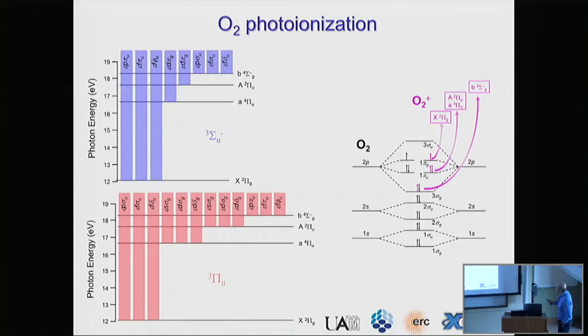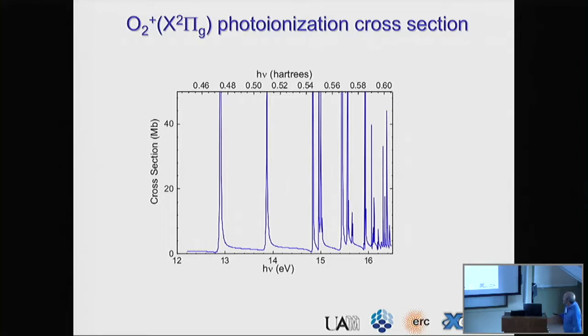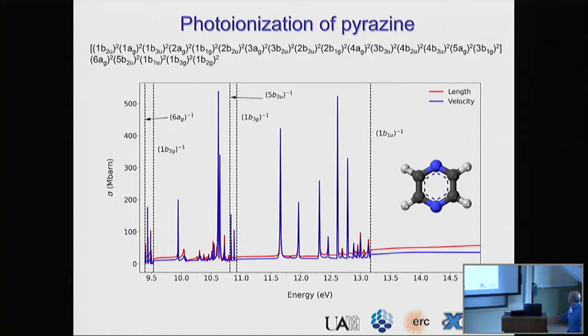Now we are studying photo ionization of oxygen. Here the initial state is a triplet, so it's much more complicated and the number of channels is much bigger. I'll just show the comparison between our results and the experimental data — the agreement is good, so the method works for the oxygen molecule. This is a blow-up of a region with many, many resonances. I think the only previous calculation available in the literature was performed a long time ago by Robert Lucas and collaborators — I have scanned that figure from his paper, obtained more than 20 years ago. The resonances are there; of course we see many more now, but this shows the method works very well.